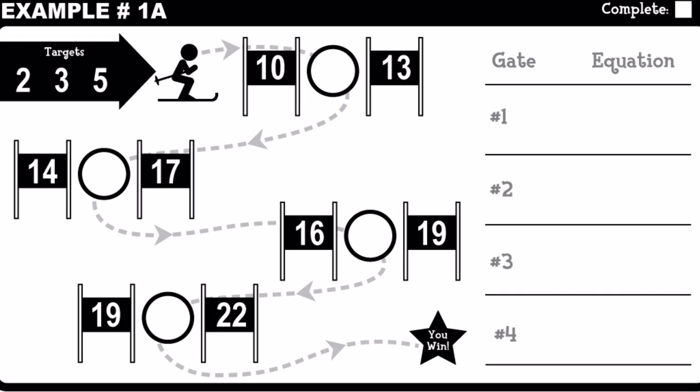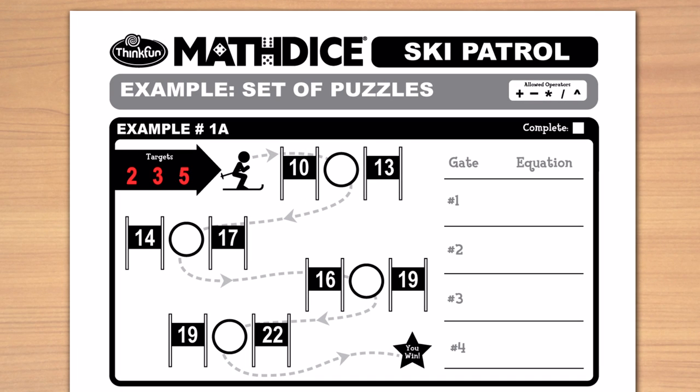To do this, use the scoring numbers found at the top of the ski run to create math expressions. Your expression needs to result in a number that falls between the two gates.